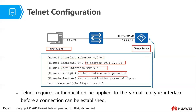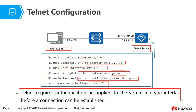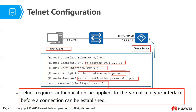Within the VTY interface, set the authentication mode. In this case we are using password authentication, not AAA. Then set the password using the command 'set authentication password cipher', press Enter, then type the password and press Enter. Telnet requires authentication to be applied to the VTY interface before a connection can be established.